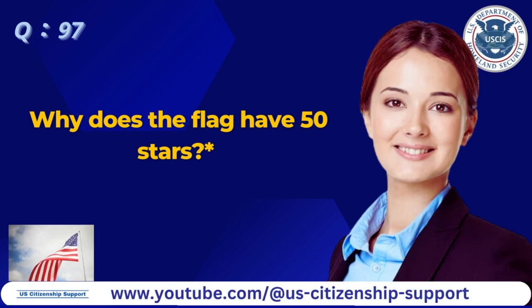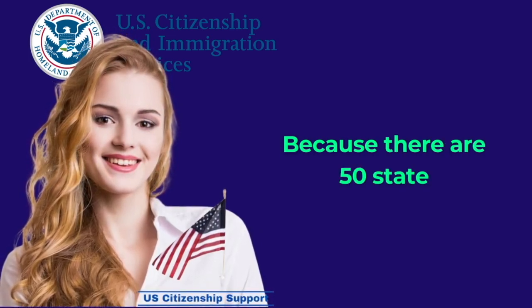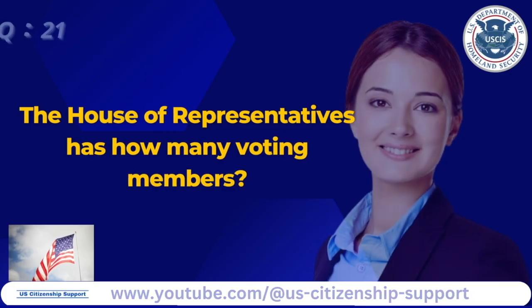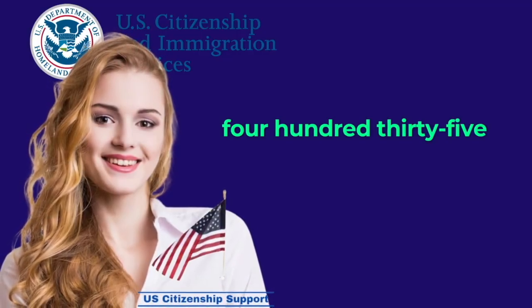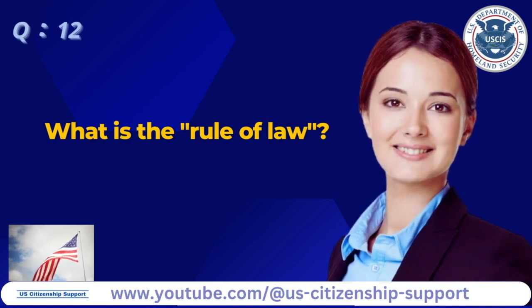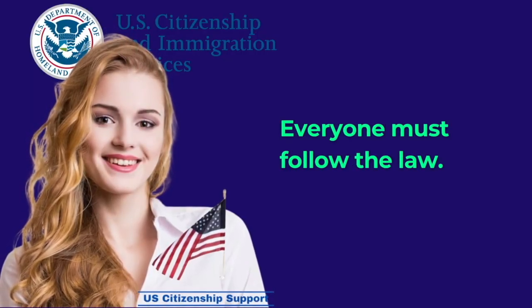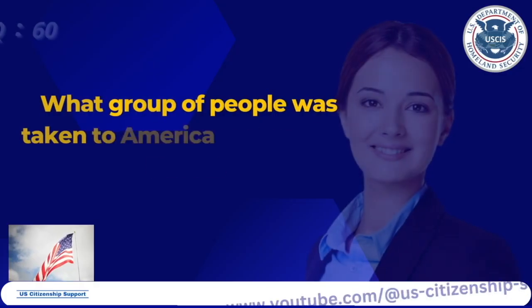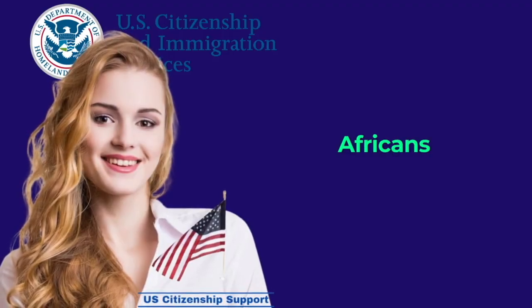Why does the flag have 50 stars? Because there are 50 states. The House of Representatives has how many voting members? 435. What is the rule of law? Everyone must follow the law. What group of people was taken to America and sold as slaves? Africans.